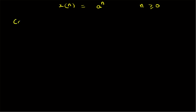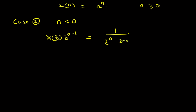Now consider Case 2 where n < 0. In this case X(z)·z^(n-1) = 1/(z^(-n)·(z - a)), so g(z) = z^(-n)·(z - a) and f(z) = 1. This has poles at z = 0 — specifically n poles at the origin, since z = 0 makes the denominator zero — and those poles are inside contour C.